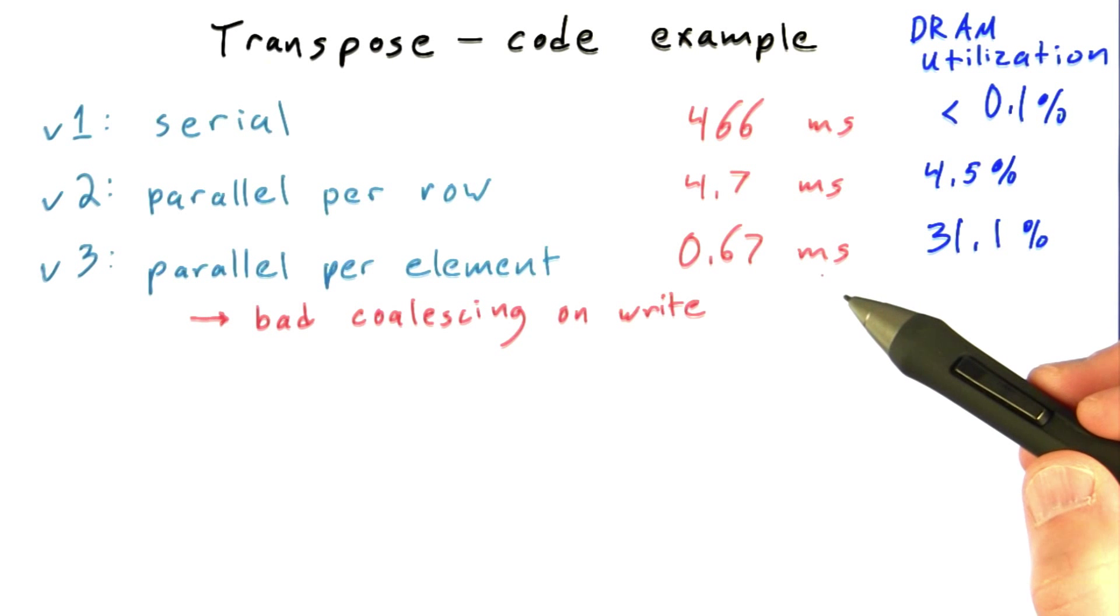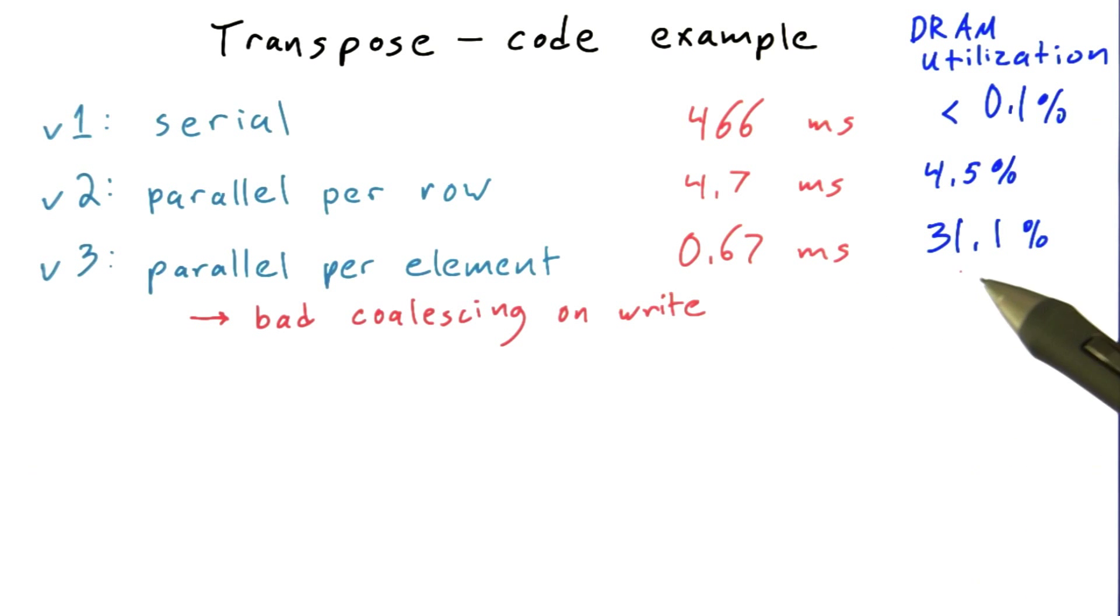It's important to be able to reason about this the way that I just described to you. So we sort of walked our way through. We figured out what kind of bandwidth we were getting and what percentage of theoretical peak that was.